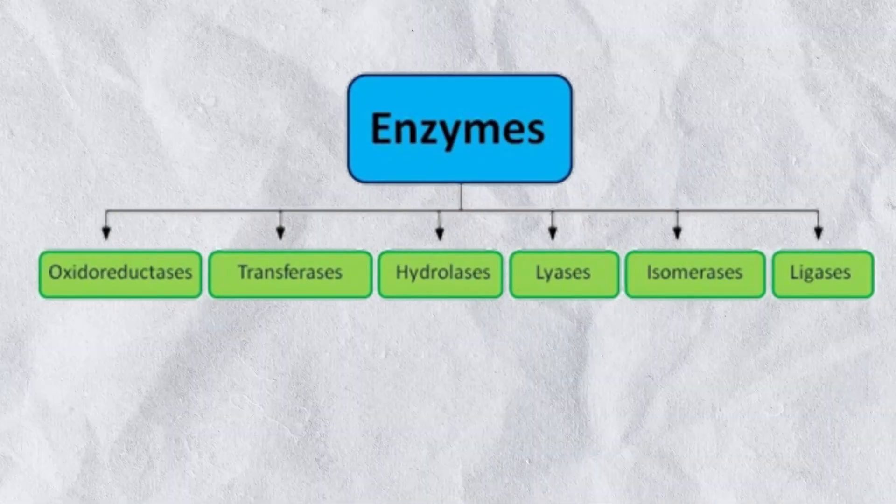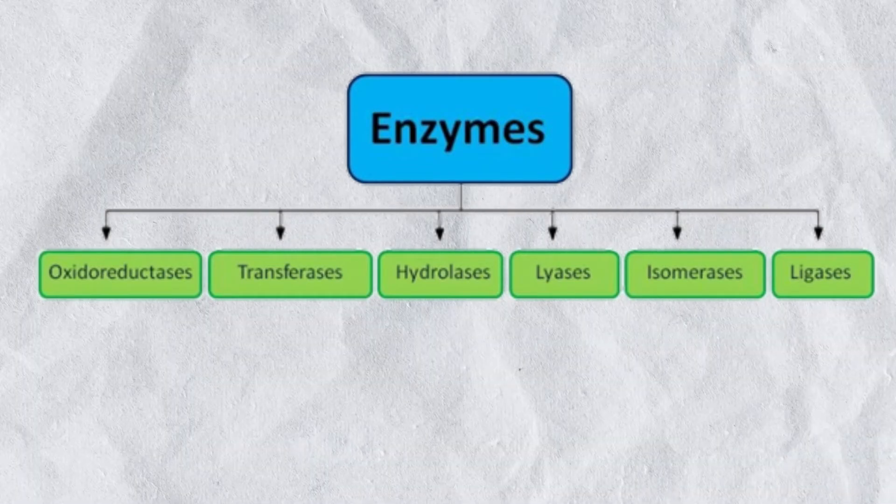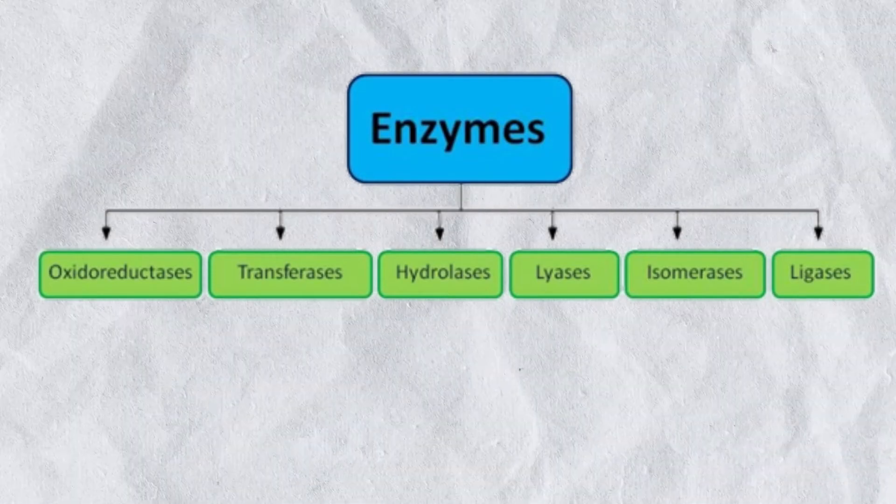Types of Enzymes. The human body includes six major groups or classes of enzymes. But before I tell you about those types, we have to know first how the enzyme works.